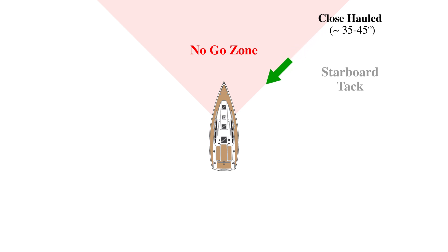This first point of sail is called close-hauled, and is as close to the wind as a boat can sail. Depending on boat design, this angle will be somewhere around 35 to 45 degrees.